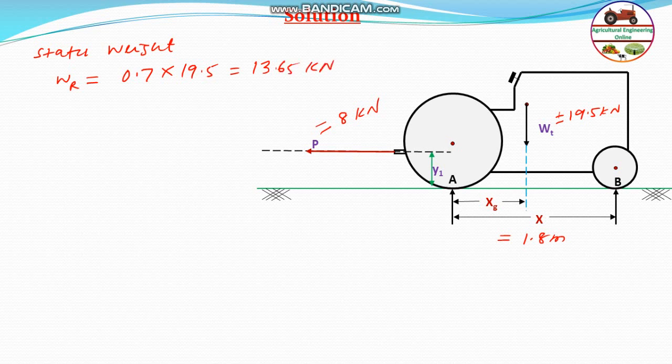Coming to the next, when there is pull of 8 kilo Newton, the pull is having a height y1. In this case y1 is given as 450 millimeter or 0.45 meter.